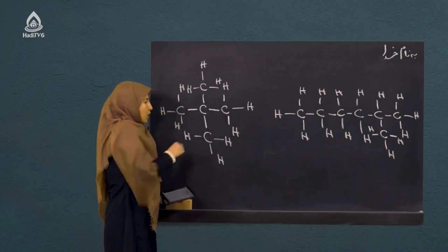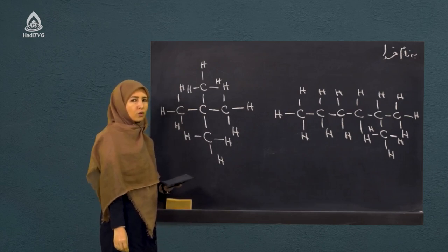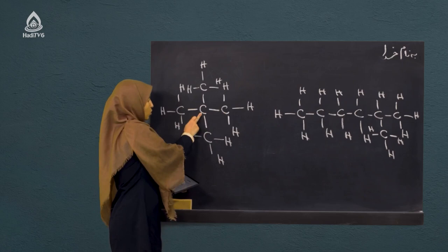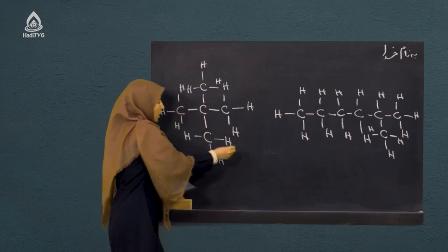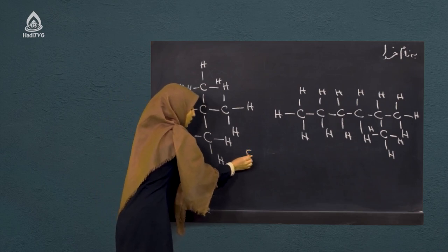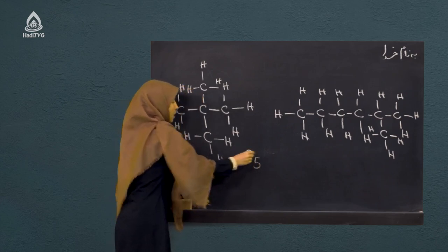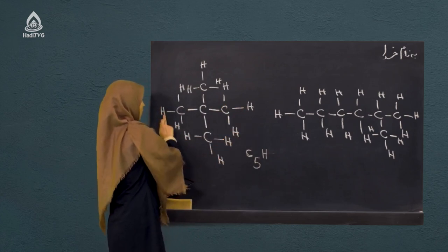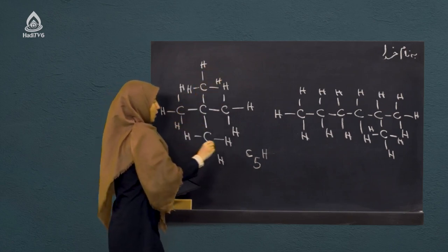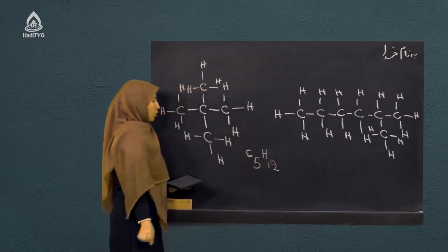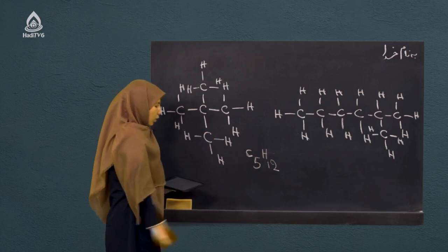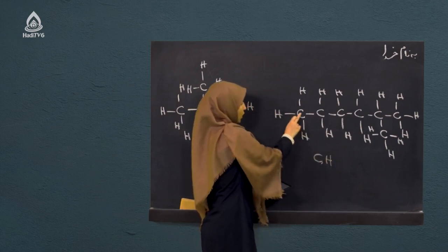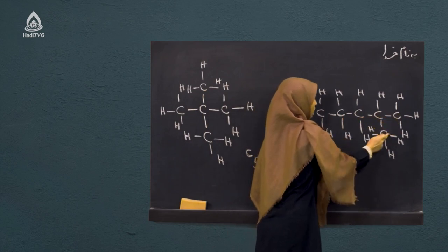برای نوشتن فرمول مالیکولی کافی است که تعداد اتم‌های کاربون و هایدروجن را بنویسیم. تعداد اتم‌های کاربون در مرکب اولی: یک، دو، سه، چهار، پنج - پنج اتم کاربون دارد، پس می‌شه C5. تعداد اتم‌های هایدروجن: یک، دو، سه، چهار، پنج، شش، هفت، هشت، نه، ده، یازده و دوازده - H12. فرمول مالیکولی مرکب دوم را به دست می‌آریم و اتم‌های کاربون و هایدروجن را می‌نویسیم.